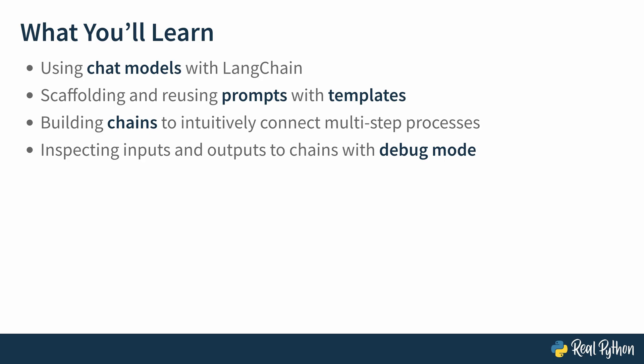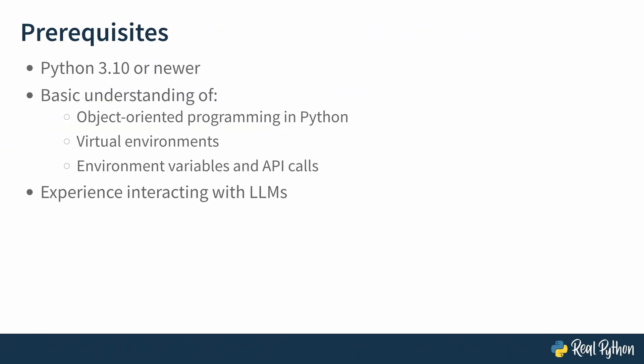Now, if that sounds interesting to you, keep going with this course. You should know a couple of things before you get started. You will need to have an installation of Python 3.10 or newer — I'll be working with 3.13 in this course. You should have a basic understanding of object-oriented programming in Python, virtual environments, and how to work with environment variables. You should also have some experience interacting with LLMs, and that's all.